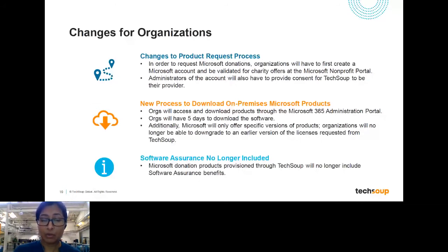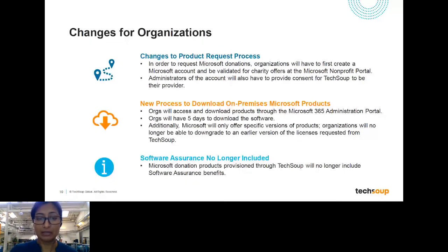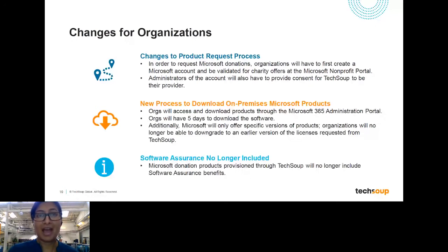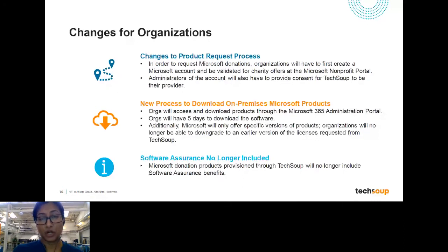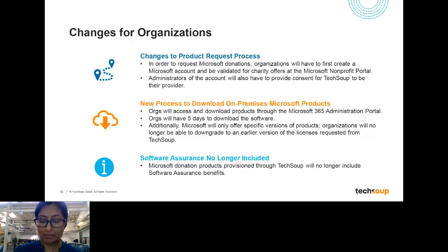The last update is about Software Assurance. Software Assurance is a benefit traditionally provided with some on-premises donation products, giving you about a two-year window in which if another product update comes, you can upgrade for free. As we move to a licensing platform where things are more regularly updated, Software Assurance is no longer going to be offered as standard with donated on-premises products. Starting in January, as you request donation products, those will no longer have the Software Assurance benefit, though there are many other benefits you'll still be able to exercise.